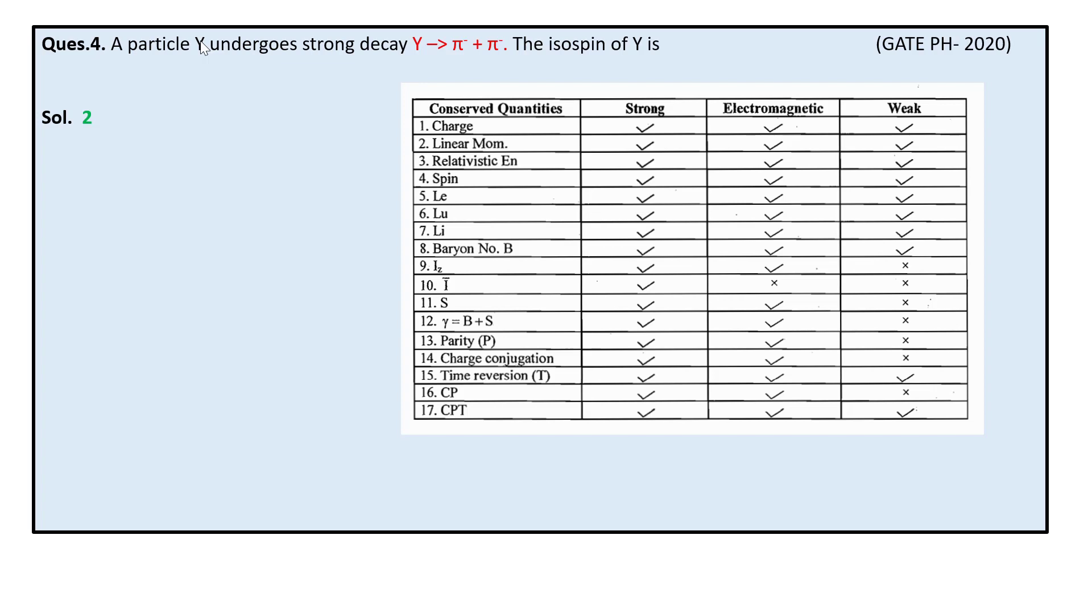Hi everyone, today I will be discussing a GATE 2020 question. In this question, we are given a reaction where a Y particle undergoes strong decay to give two pions, and we are asked to find out the isospin of Y.